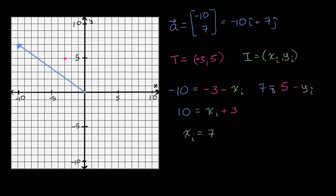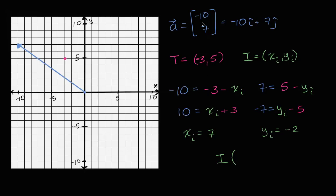Doing the same for the y equation, multiplying both sides by negative one gives negative seven equals y_i minus five. Adding five to both sides, our initial y equals negative two. So our initial point, given that the terminal point is negative three comma five, is the point seven comma negative two.